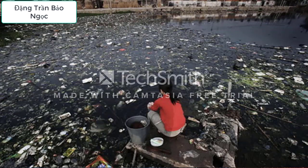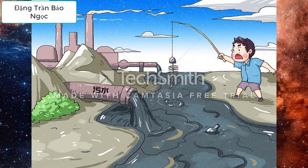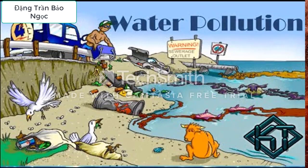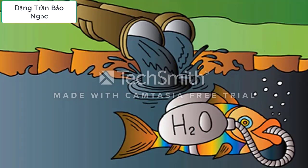Second, about water pollution: it causes serious impacts on human health. People living in polluted areas are increasingly affected by many diseases due to dirty water in their daily life. In addition, it affects aquatic organisms, because water is a habitat of aquatic species. When water sources are heavily polluted, they will not be able to survive or may even be poisoned and die. Moreover, the use of chemicals and fertilizers in agricultural production readily causes severe pollution of water sources, leading to crops dying in mass and causing economic losses.